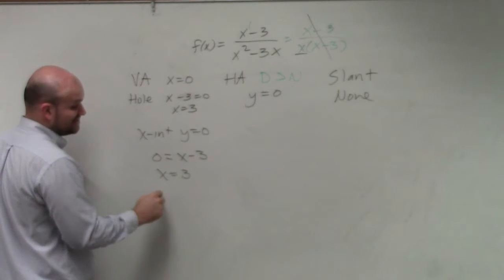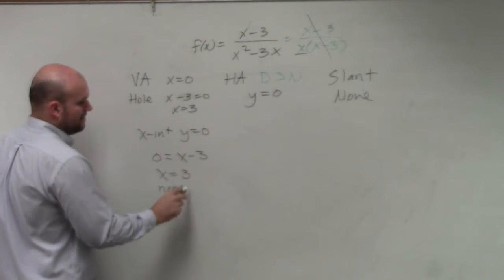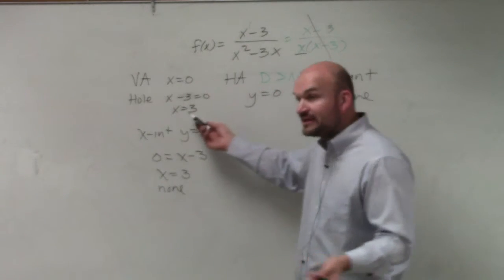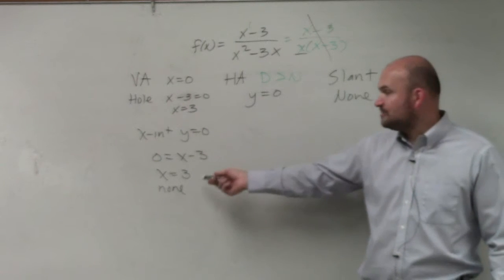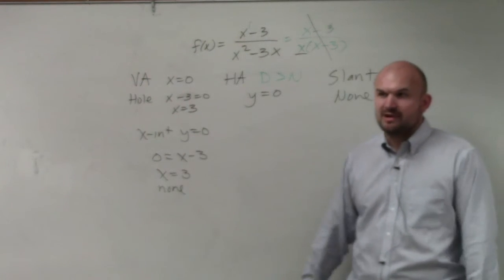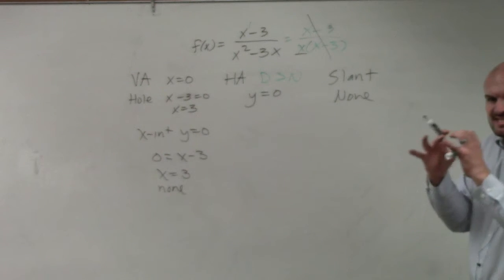So guess what? Is there an x-intercept? No, there's actually none, because at x equals 3, there's a hole. It would be perfect if we didn't have a hole there, then that would be our x-intercept. But since there's a hole at 3, there is no x-intercept, because it technically doesn't exist. It's a hole.